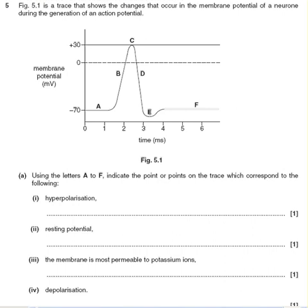Figure 5.1 is a trace that shows a change that occurred in the membrane potential of a neuron during the generation of an action potential. Using letters A to F, indicate the point or points on the trace which correspond to the following.